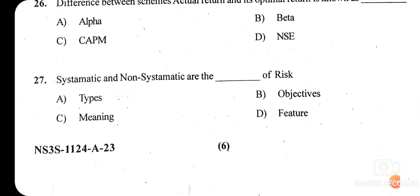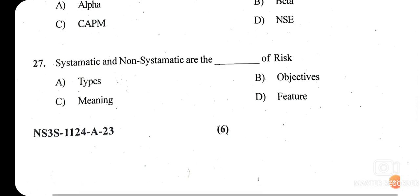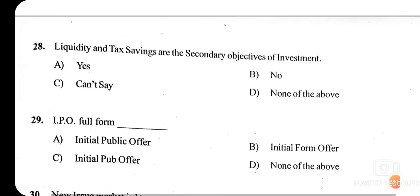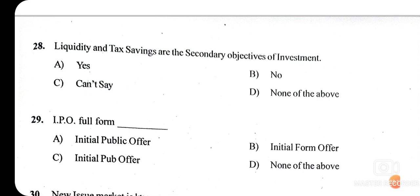Question twenty-seven: systematic and non-systematic are the dash of risk. There are only two types of risk — systematic risk and non-systematic risk. So option A — types — is the right answer for question twenty-seven.